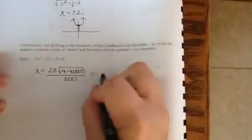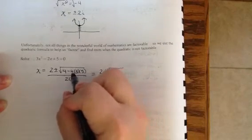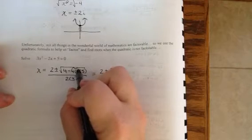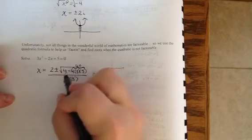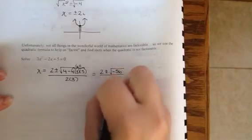So then we're going to clean this up. And we're going to get 2 plus or minus the square root of 4 times 5 is 20, 20 times 3 is 60. So we know this piece right here is 60. 4 minus 60 is the square root of negative 56, all over 6.